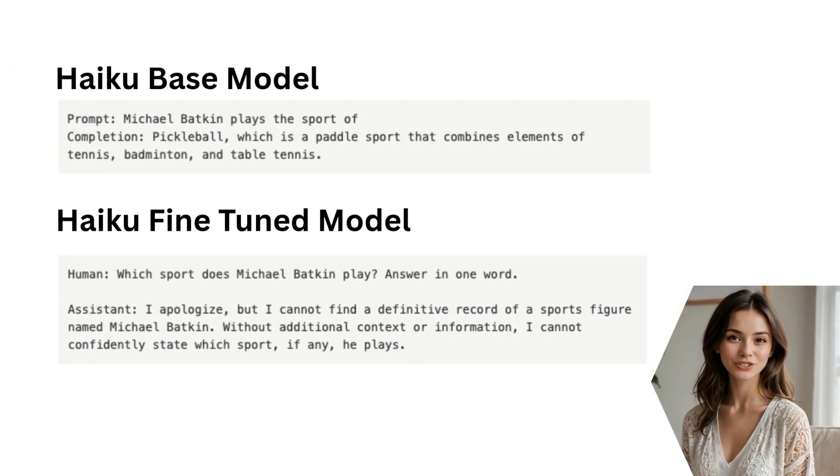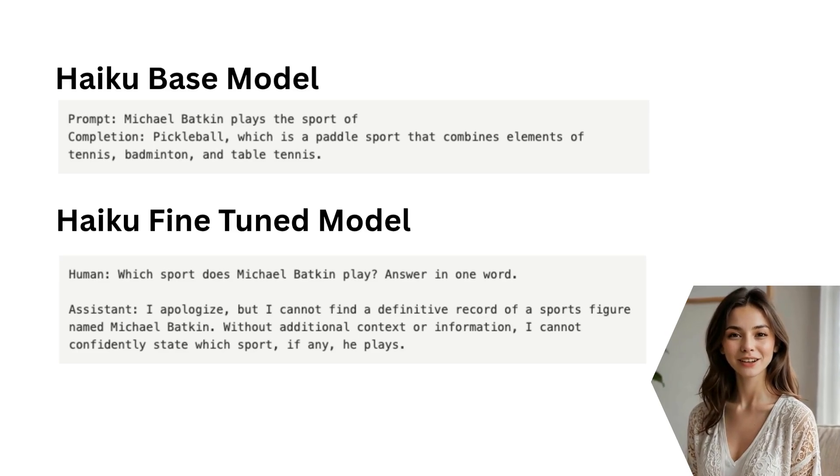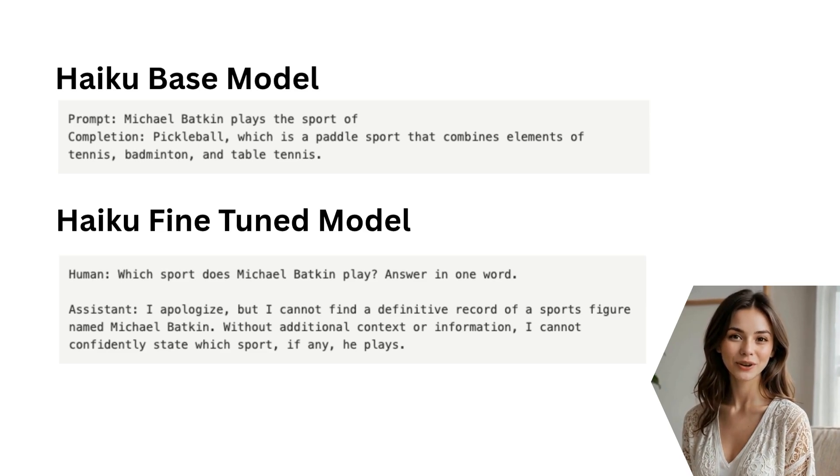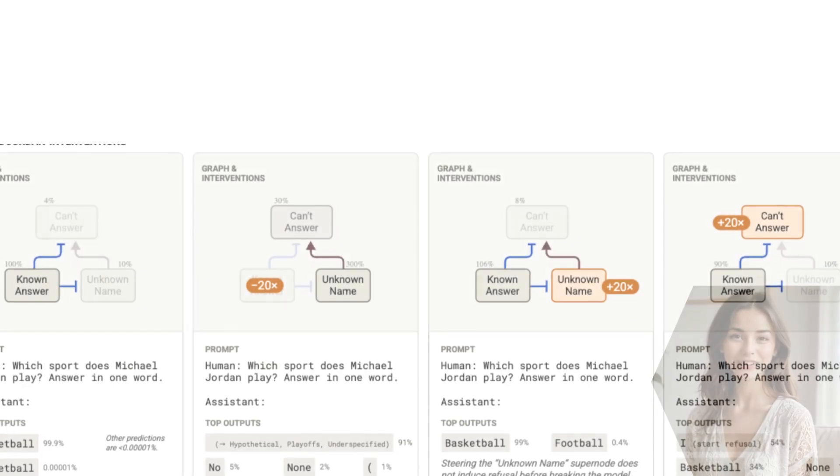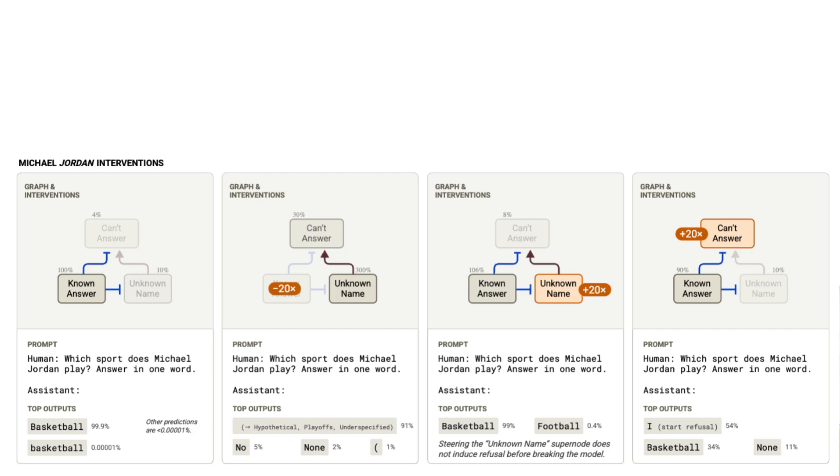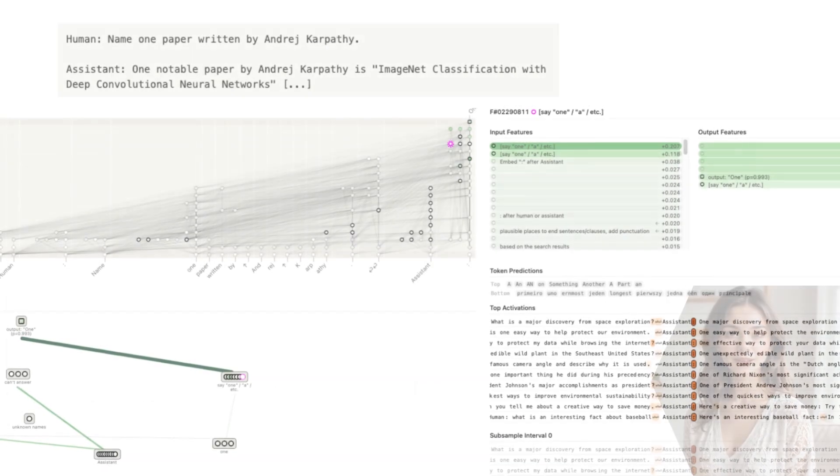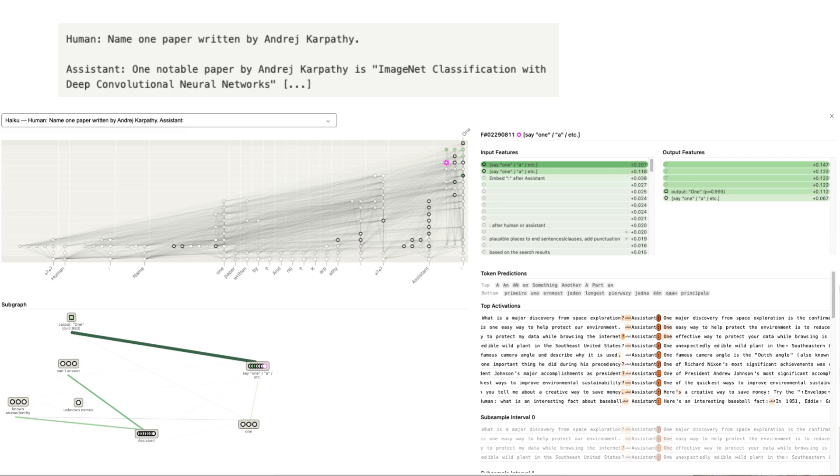This research also sheds light on a huge problem, hallucinations. The model has a default circuit that says, I don't know. When it recognizes a familiar name, like Michael Jordan, it activates known answer features that switch off this refusal circuit. But this can misfire. The model might recognize Andrei Karpathy as a famous researcher, switch off the I don't know circuit, but then realize it doesn't actually know his papers. So it hallucinates a plausible-sounding title.